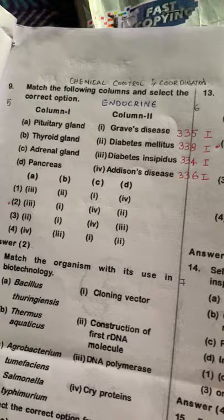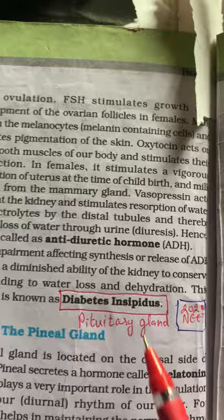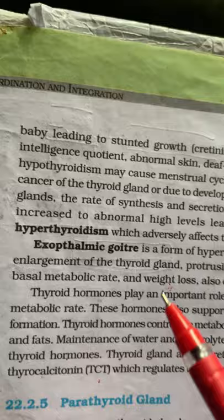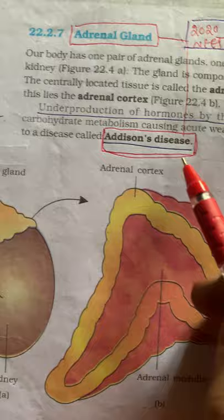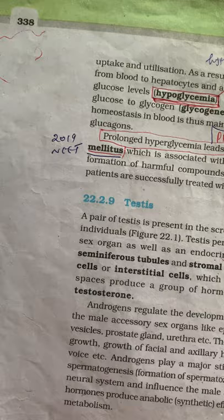Coming to pages 334–335. Diabetes Insipidus — Pituitary gland. Graves' disease — Thyroid gland. Addison's disease — Adrenal gland. Diabetes Mellitus — Pancreas. See, exactly from the NCERT textbook.